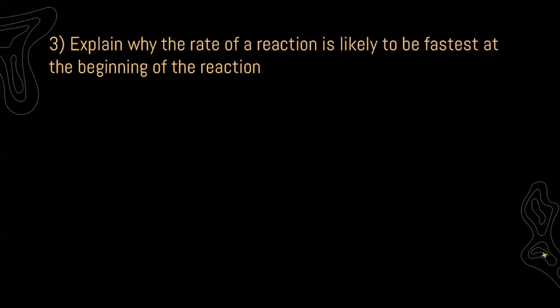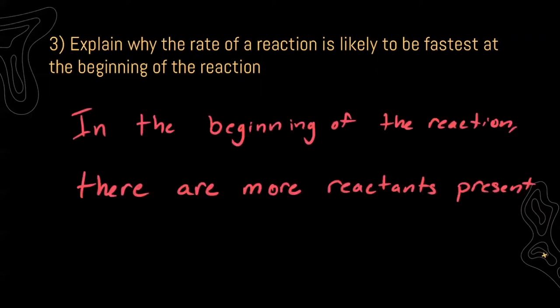For 3 it says explain why the rate of a reaction is likely to be the fastest at the beginning of a reaction. At the beginning of a reaction, we're going to have our reactants all crashing into each other and then slowly we're going to form our product. As we form something new, that means there's going to be less reactants — less concentration of them — so less particles crashing into each other. So we can say in the beginning of the reaction there's going to be more reactants present, a higher concentration, allowing the rate of the reaction to be faster in the beginning versus towards the end.